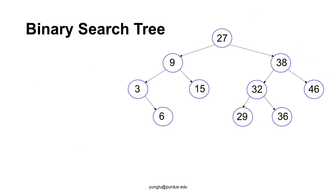Let's see how a binary search tree can be used in search. First, let's check whether this is a binary search tree. The root stores 27. The left subtree stores 9, 3, 15, and 6 — all smaller than 27. The right subtree stores 38, 32, 46, 29, and 36 — all greater than 27. Thus, for the root node, the property is satisfied. Next, we check node 9. Its left subtree has values 3 and 6, both smaller than 9. The right subtree of node 9 stores 15, which is greater than 9. So far, the binary search tree property is satisfied.